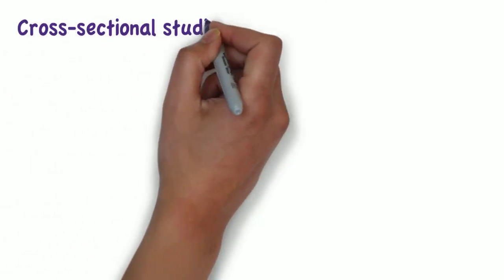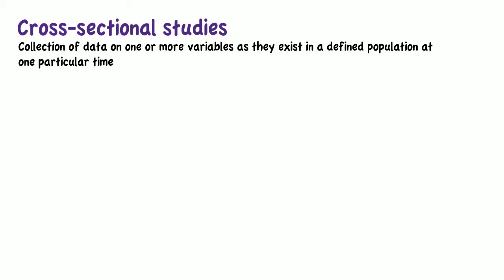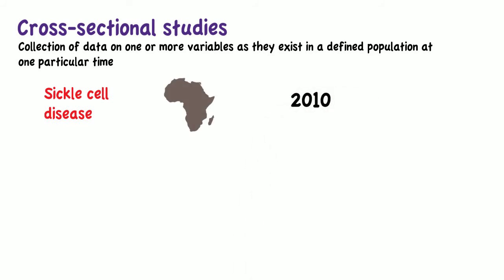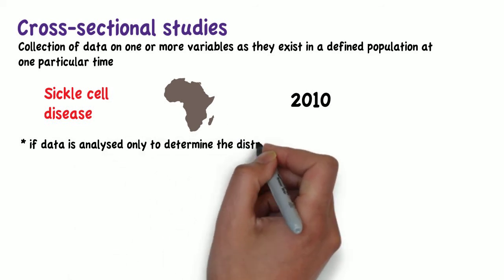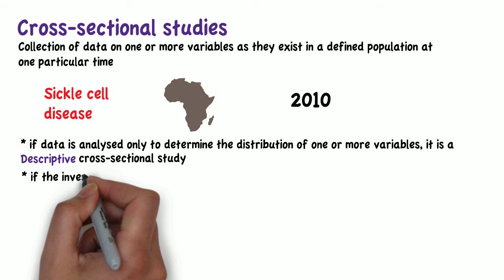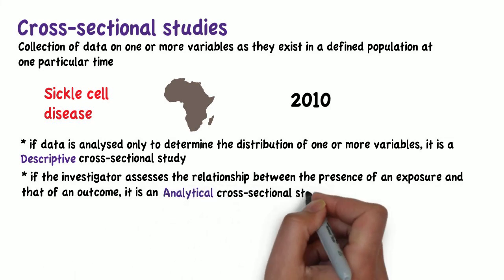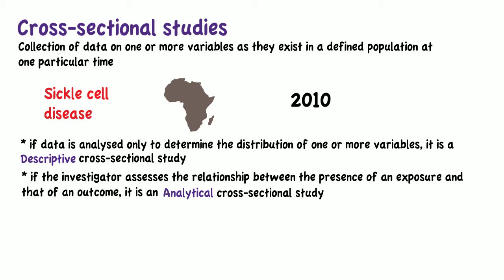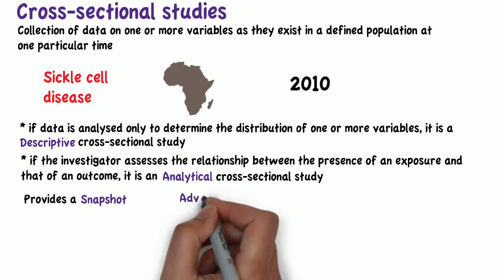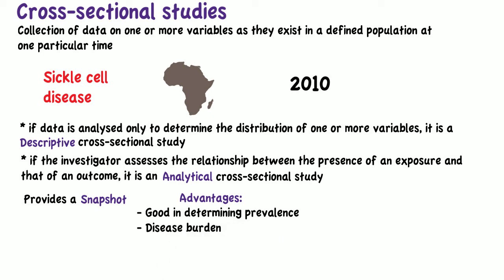Cross-sectional studies involve the collection of data on one or more variables as they exist in a defined population at one particular time — for example, determining the prevalence of sickle cell disease in African children at a particular point in time. If data are analyzed only to determine the distribution of variables, it is a descriptive cross-sectional study. If the investigator assesses the relationship between an exposure and an outcome, it is an analytical cross-sectional study. These studies are good for determining the prevalence of a disease and thus the disease burden.